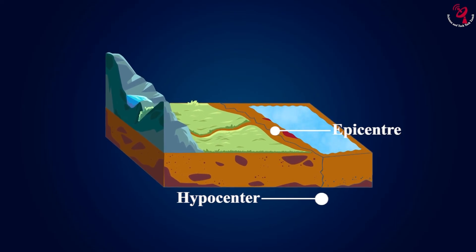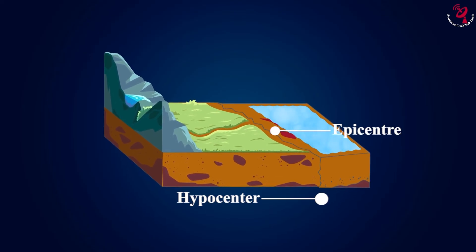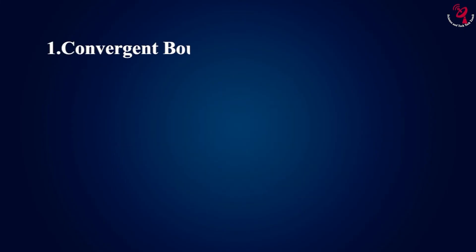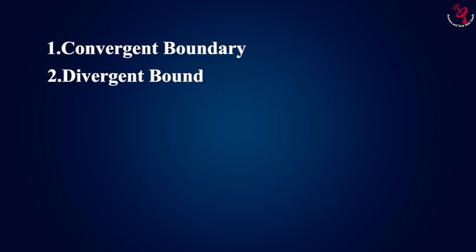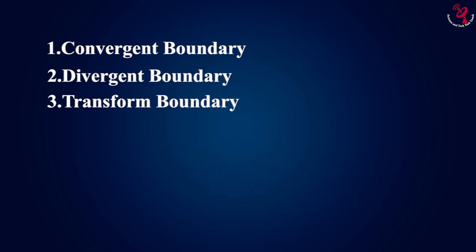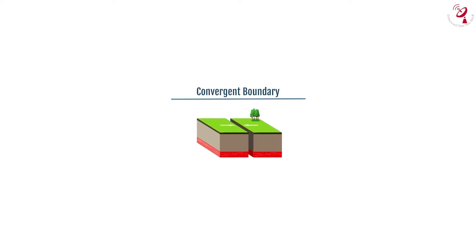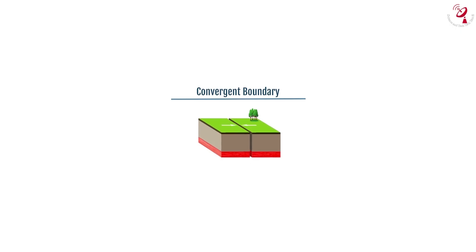The movement of tectonic plates is classified into three types. They are convergent boundary, divergent boundary, and transform boundary. Convergent boundary occurs when two tectonic plates push together. When an ocean plate and a continental plate collide, the ocean plate slides under the continental plate and bends downward.